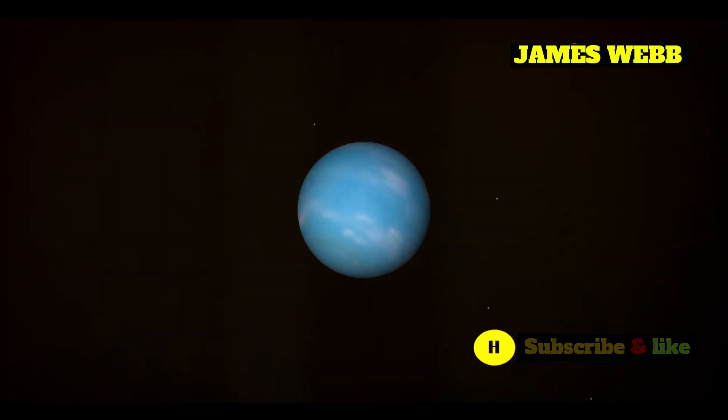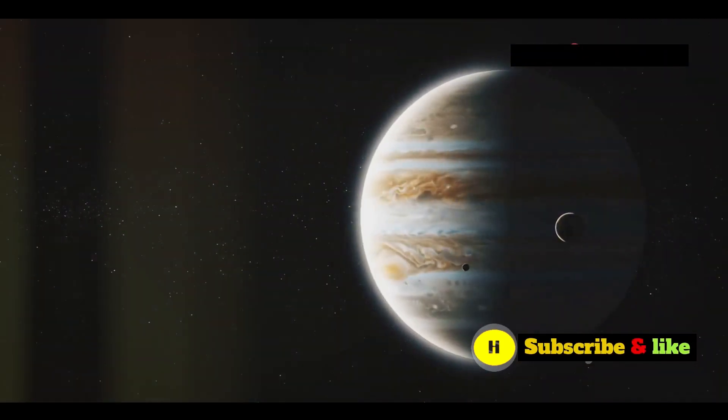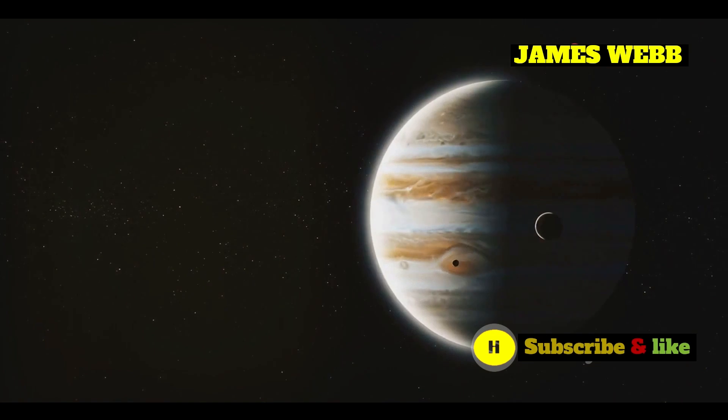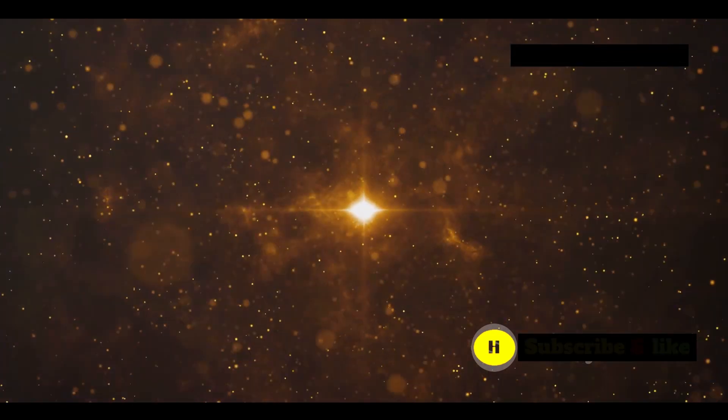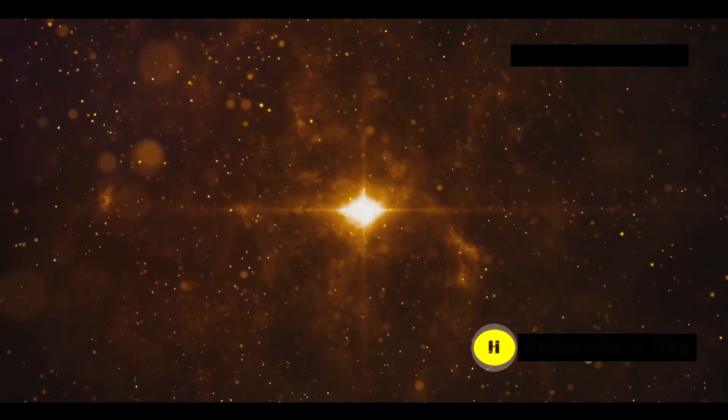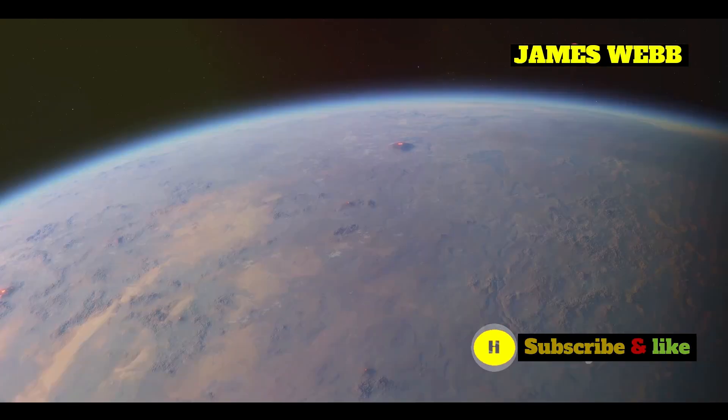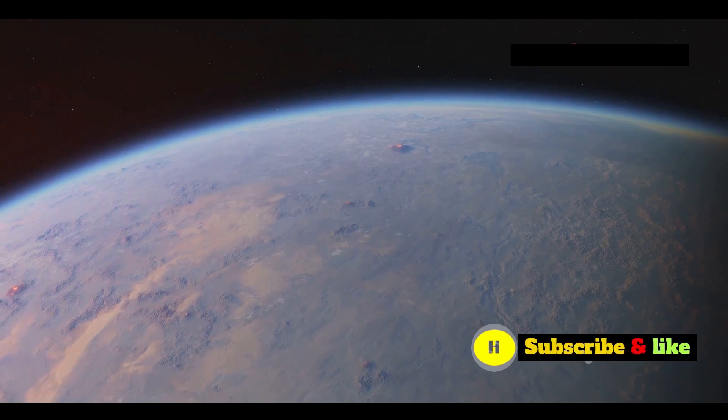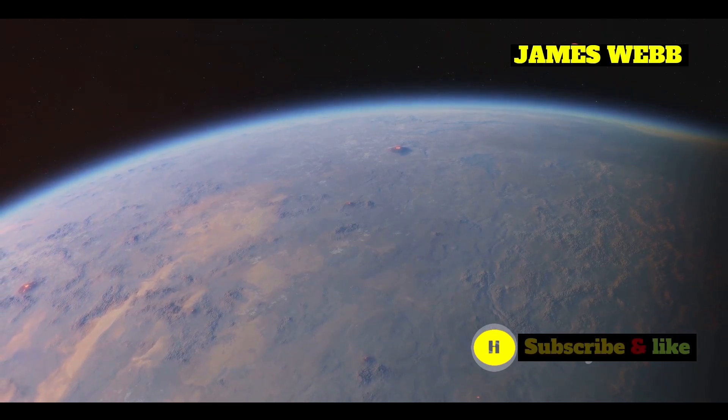55 Cancri E's orbit around its star is not only incredibly close but also highly eccentric. This means that the planet's distance from its star changes a lot throughout its orbit. At its closest point, 55 Cancri E is much closer to its star than Mercury is to our Sun.